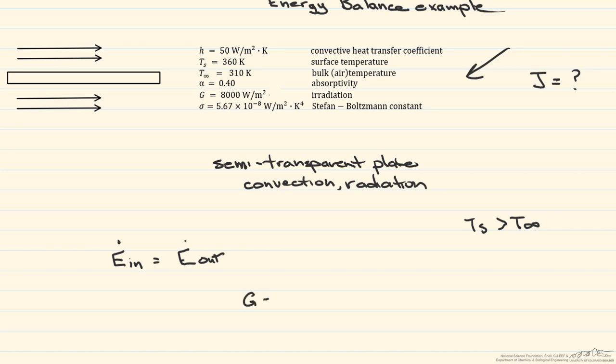So our energy balance gives us: E_in, which is our irradiation, equals our convective heat transfer plus radiosity. You have convection and radiation from both sides, but dividing everything by two gives us our basic energy balance.